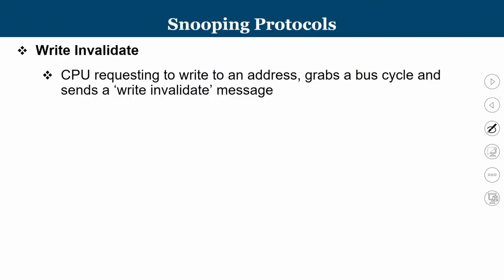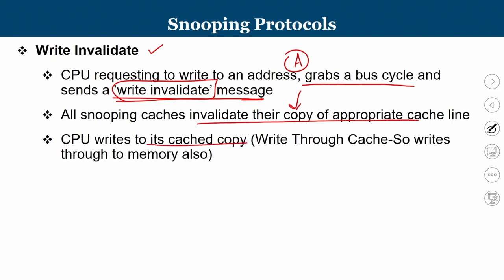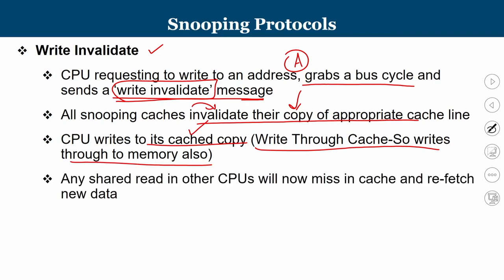Snooping protocols are of two types. In write invalidate: the CPU requesting a write grabs the bus cycle and sends a write invalidate message; all snooping caches invalidate their copy of the appropriate cache line. After the CPU writes to its local copy — using write-through, also updating main memory — any subsequent shared read by other CPUs will miss in the cache and must refetch the new data from main memory.